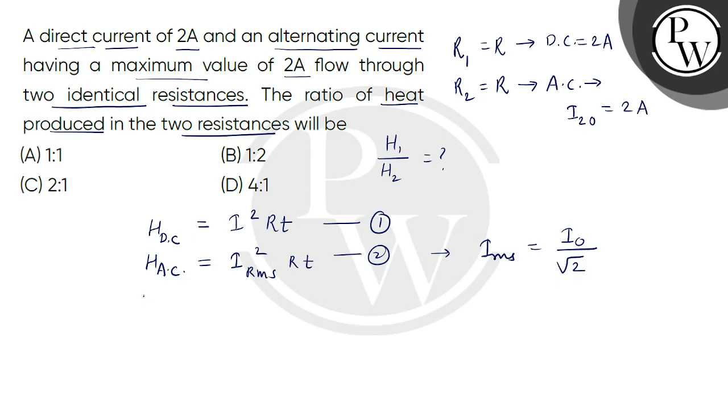Now when we take their ratio, this is HDC divided by HAC. So from here we will get I square divided by I not divided by square root 2 whole square.